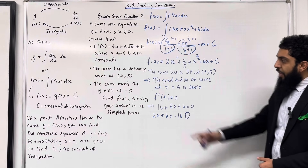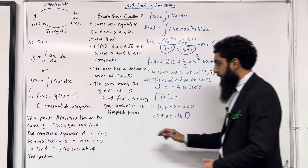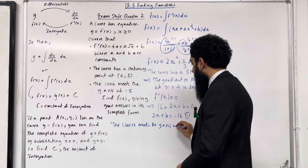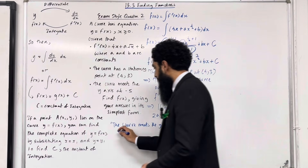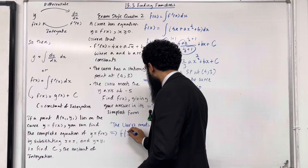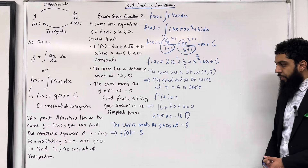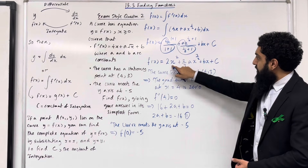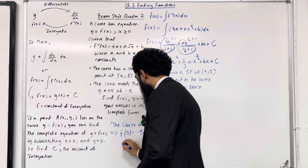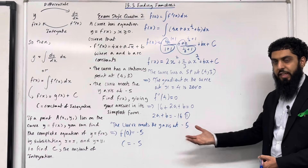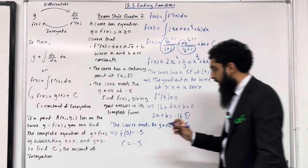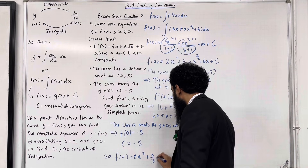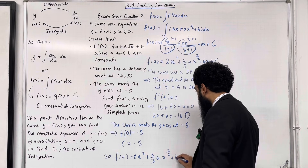Third bullet point: the curve meets the y-axis at -5. This means f(0) = -5. Substituting x = 0 into f(x), all x terms become 0, leaving just c. So c = -5. Putting c = -5 back into f(x): f(x) = 2x² + 2a/3 · x^(3/2) + bx - 5.